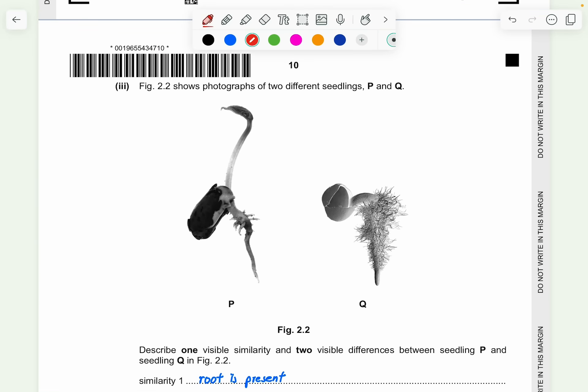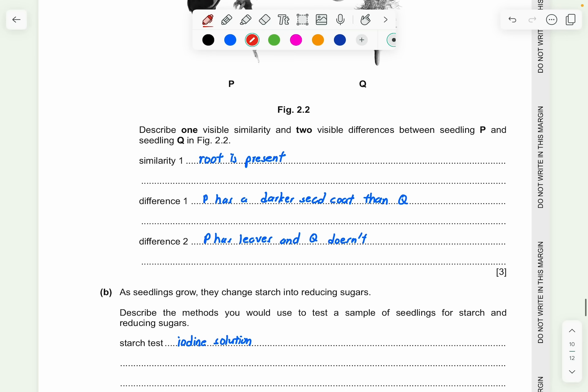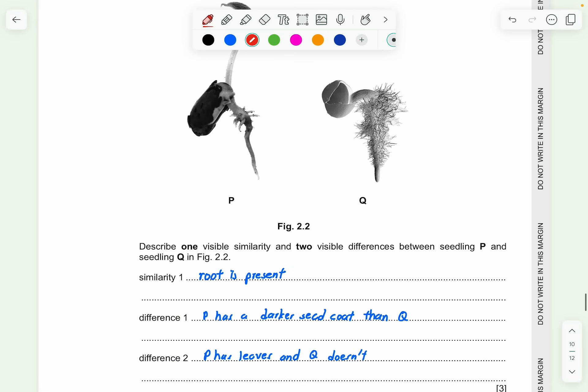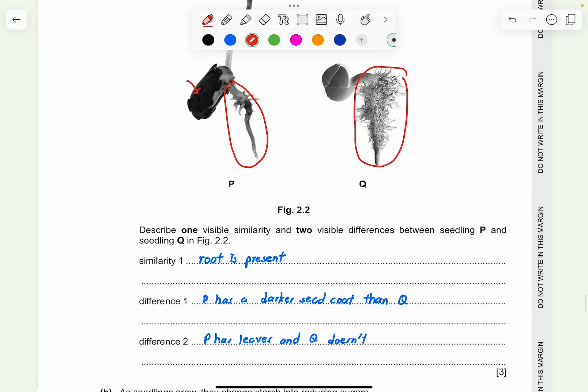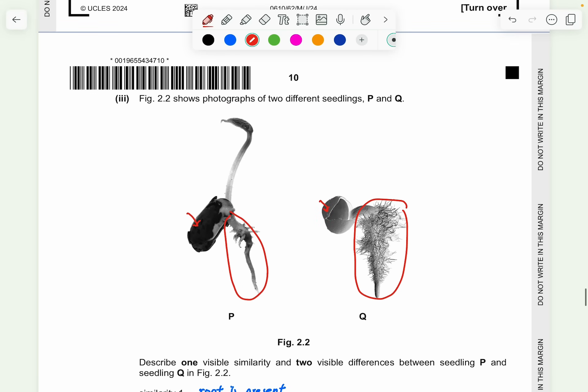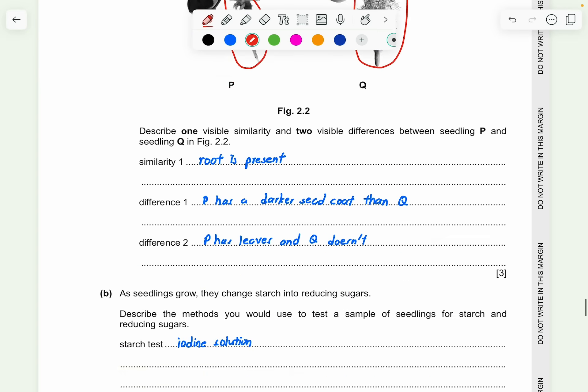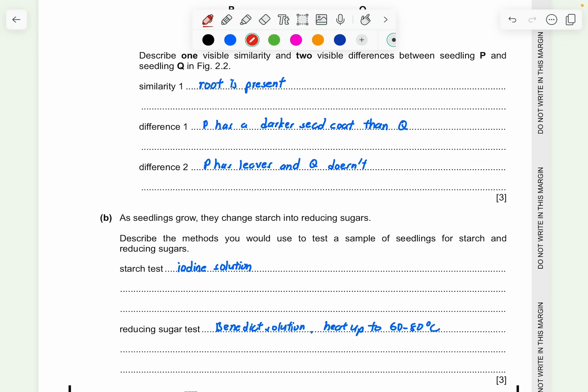Now part 3. Figure 2.2 shows photographs of two different seedlings, P and Q. So they ask you to describe one visible similarity and two visible differences between seedling P and seedling Q in figure 2.2. So in similarity 1, you can see that there are roots in both. So you can just mention that roots are present. The difference in the first one is that P has a darker seed coat than Q. Or you can say that P has leaves, but for Q, there is no leaves present. So this is how simple you can go with your observation of the differences and the similarities.